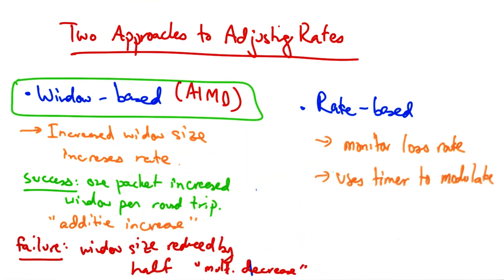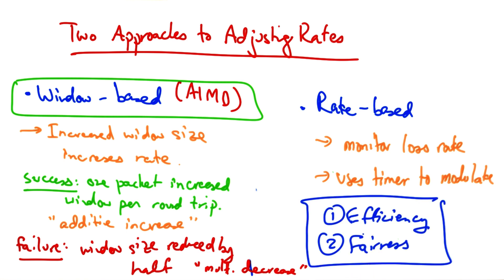Window-based congestion control, or AIMD, is the common way of performing congestion control in today's computer networks. In the next lesson, we will talk about the two goals of TCP congestion control further, efficiency and fairness, and explore how TCP achieves those goals.